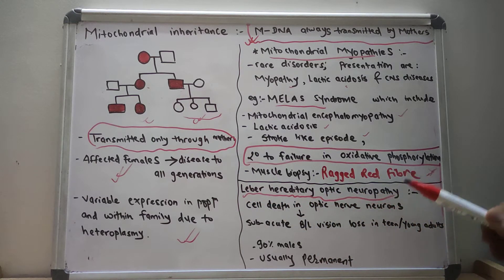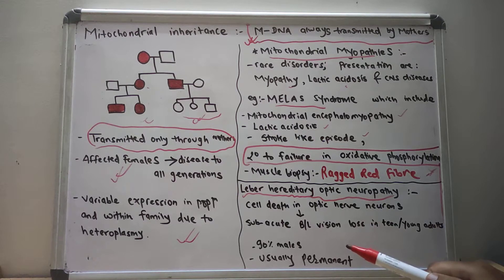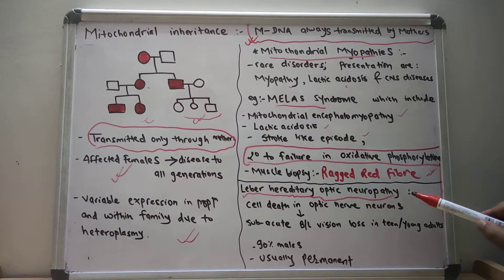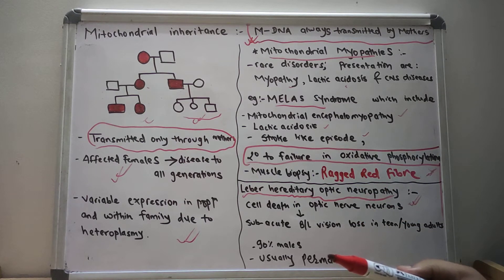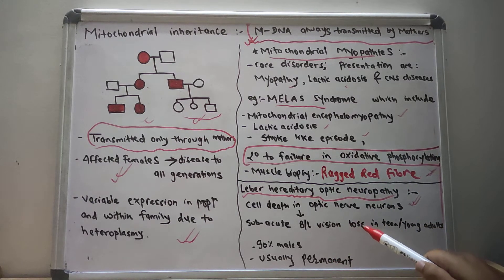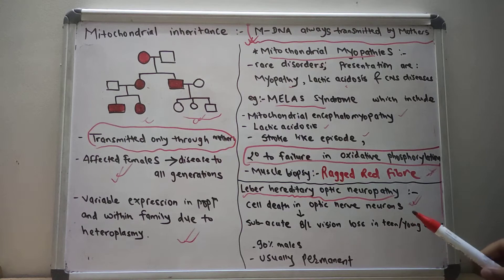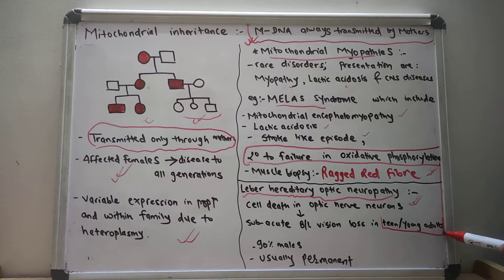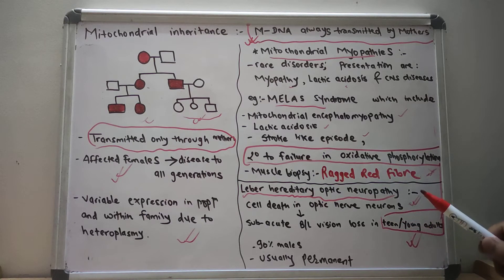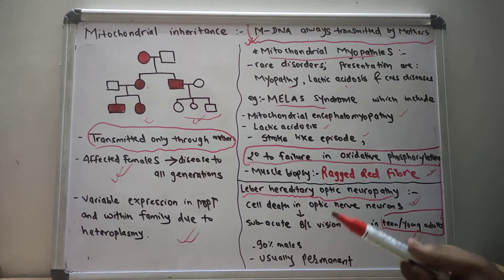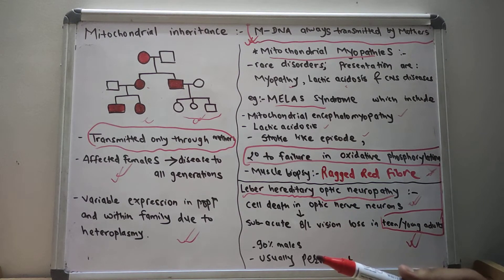Another topic you should know is Leber Hereditary Optic Neuropathy. In this neuropathy, there is cell death in the optic nerve neurons. After the cell death of these neurons, there is subacute bilateral vision loss in teenagers or young adults — not acute and not chronic, but subacute — due to some form of mitochondrial disease.